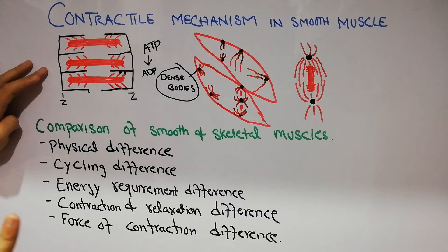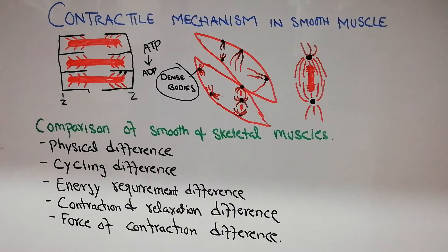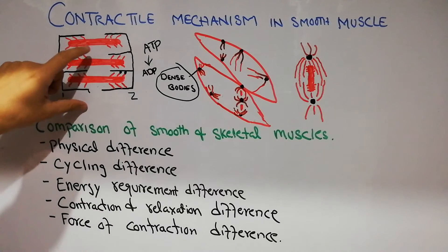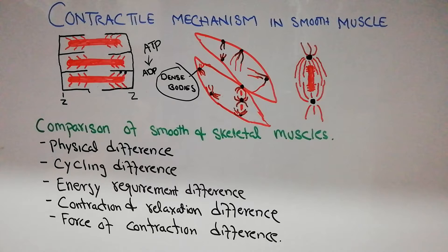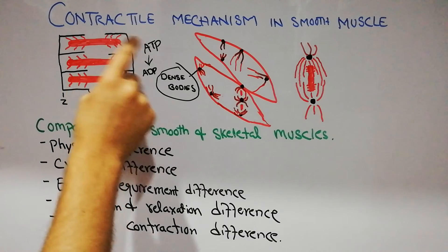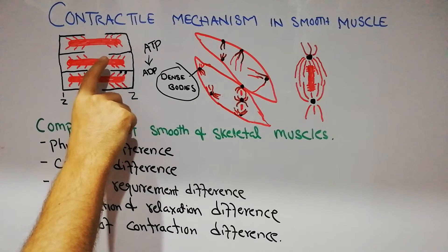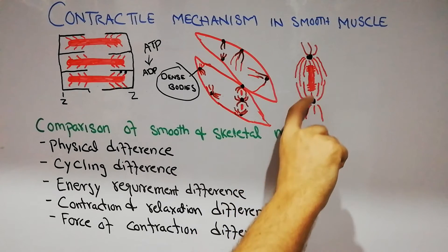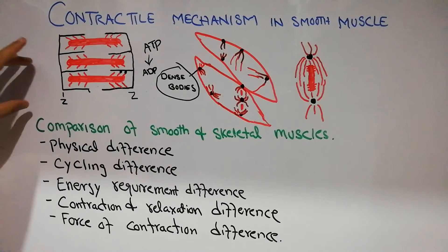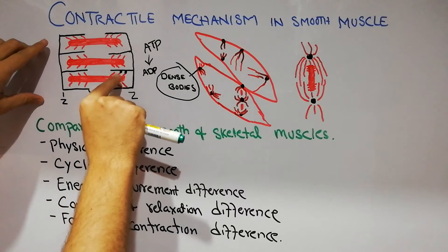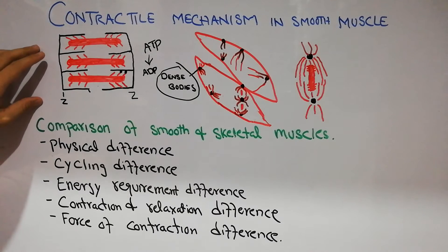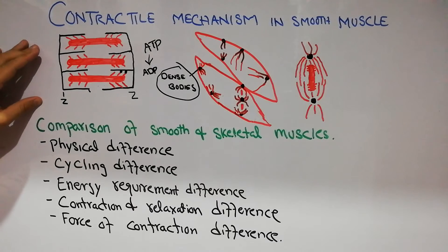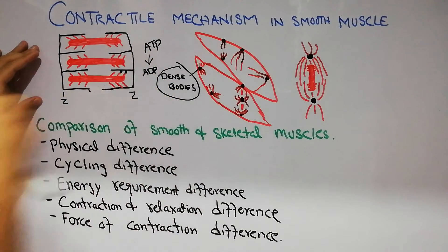There are a few similarities between the structure and mechanism of smooth and skeletal muscles. First, the actin and myosin filaments present in skeletal muscles are also present in smooth muscles. Each myosin filament is surrounded by many actin filaments in skeletal muscles, and similarly in smooth muscles. The cross bridges between actin and myosin filaments attach and detach when calcium enters and ATP is broken down and energy is released.